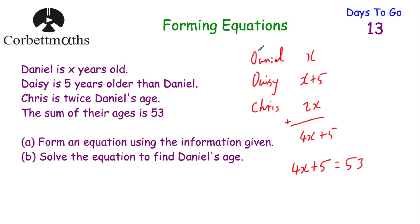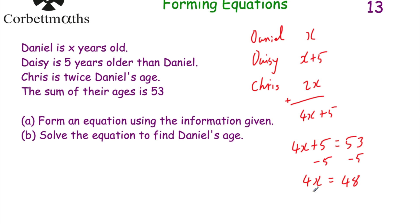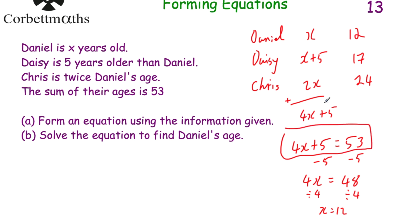Part B: solve the equation and find Daniel's age. Take away 5 from both sides to get rid of the plus 5 — we're left with 4X equals 48. Divide both sides by 4, and X equals 12. So Daniel is 12 years old. If we were asked for Daisy's age we'd add 5 to get 17, and Chris's age would be double, so 24. We can check by adding 12 plus 17 plus 24 equals 53. Well done if you got those.